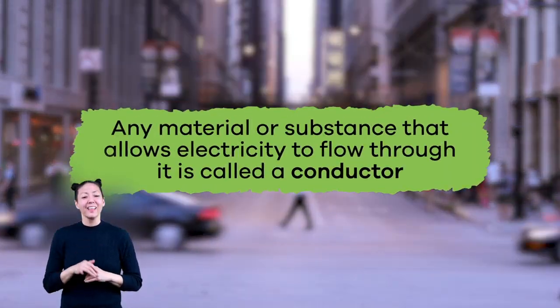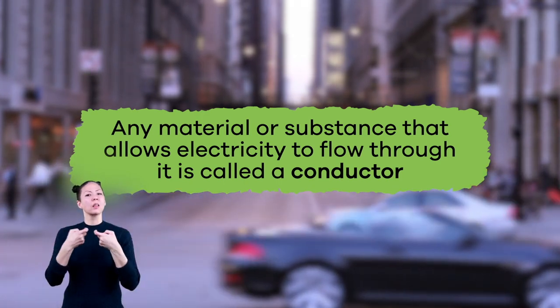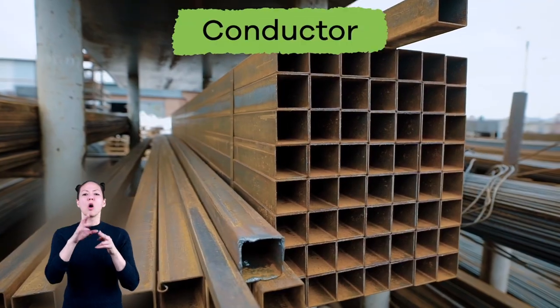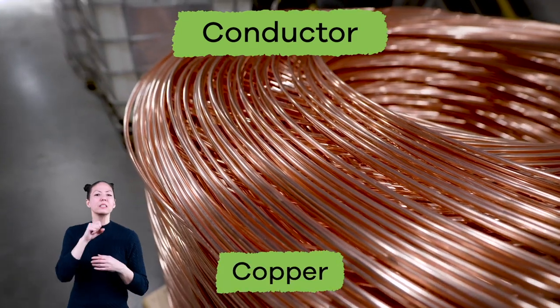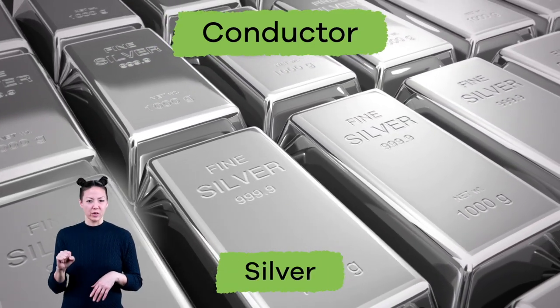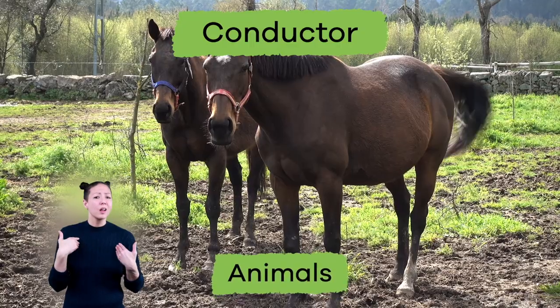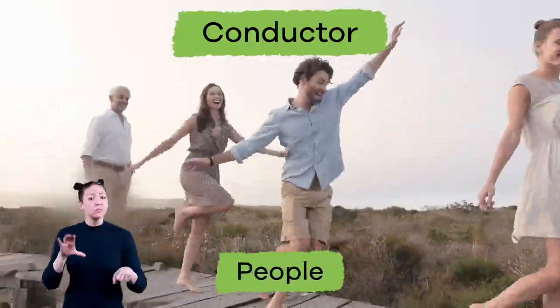The name for any material or substance that allows electricity to flow through it is called a conductor. Conductors include metals, like steel, copper, iron, gold, and silver. But water, animals, trees, and even people can be conductors too.